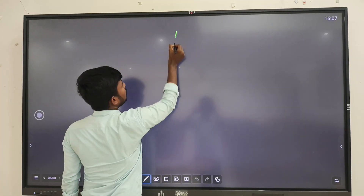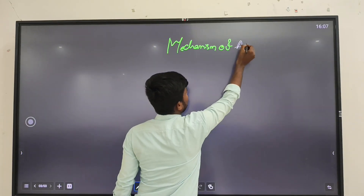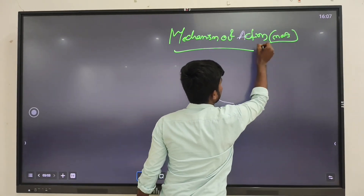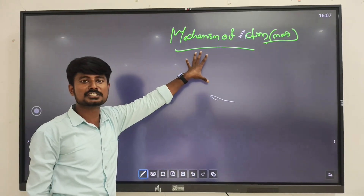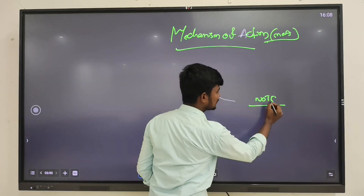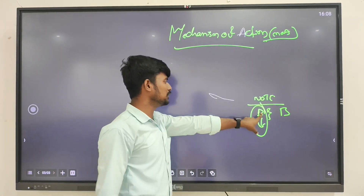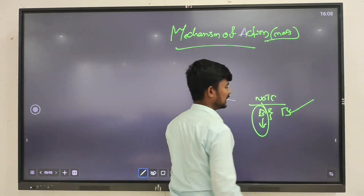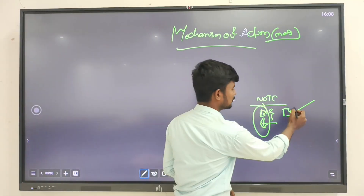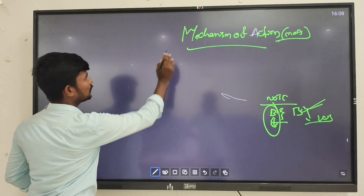Next we move on to the mechanism of action. What is the mechanism of action of barbiturates? One important point: benzodiazepines and barbiturates - benzodiazepines are nowadays used more commonly compared to barbiturates. Nowadays we are using benzodiazepines for sedating patients; barbiturates are used less frequently.